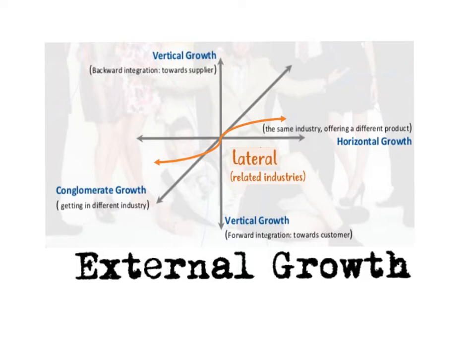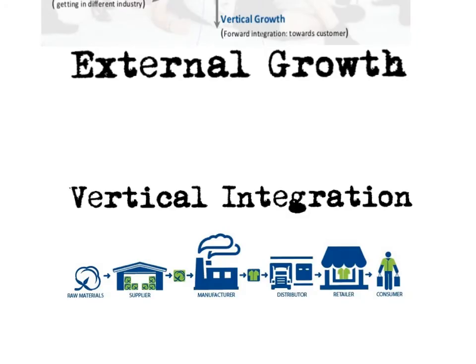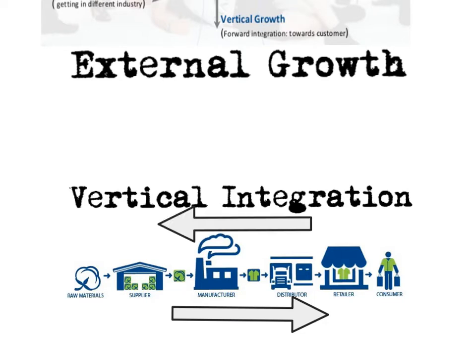Looking at this diagram, you can see that vertical growth backwards integration is towards the supplier, and vertical growth forward integration is towards the customer. Looking at the supply chain and its different stages, an example of forward vertical integration would be the manufacturer buying the retailer, meaning the manufacturer is getting closer to the consumer. Backwards integration might be the retailer merging with or acquiring the manufacturer to get closer to the raw materials, suppliers, and inputs.